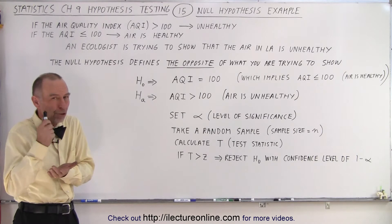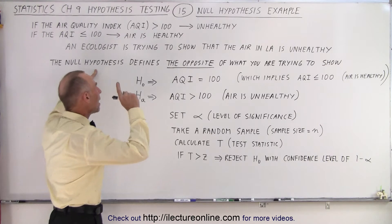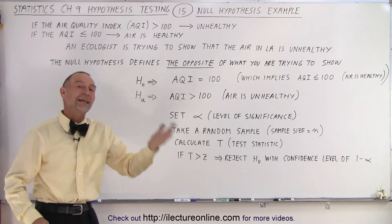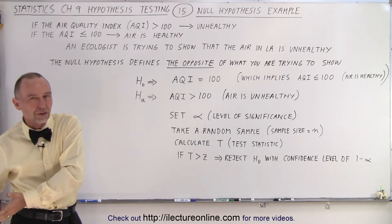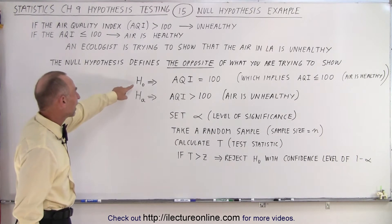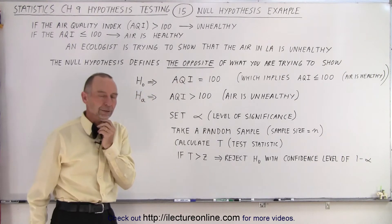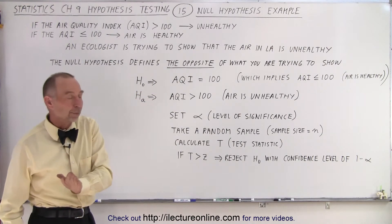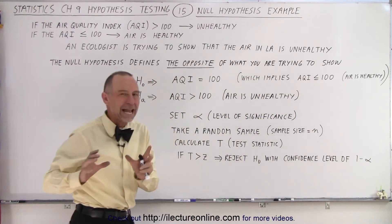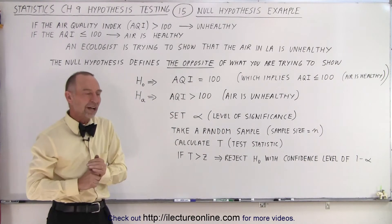Well, we first need to come up with a null hypothesis. Notice that the null hypothesis defines the opposite of what you're trying to show. Then you're trying to reject that null hypothesis so that the alternate hypothesis is true. So in this case, the null hypothesis is that the AQI is equal to 100 — which really implies equal to or less than 100 — meaning the air is healthy. That's the hypothesis the ecologist is trying to reject.